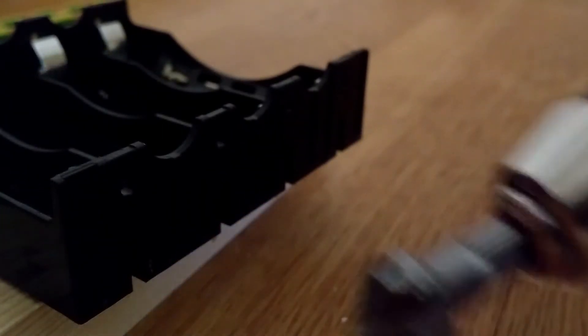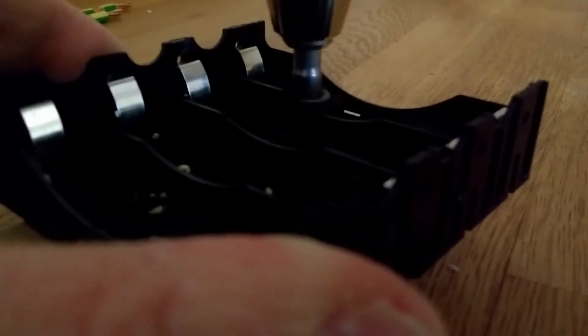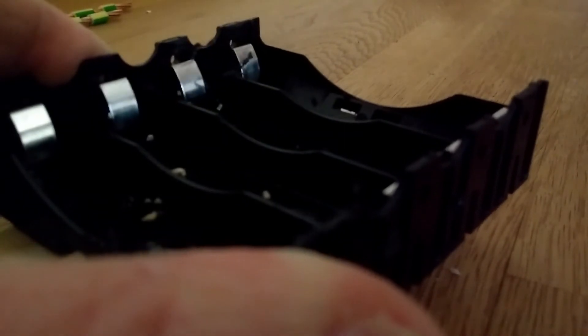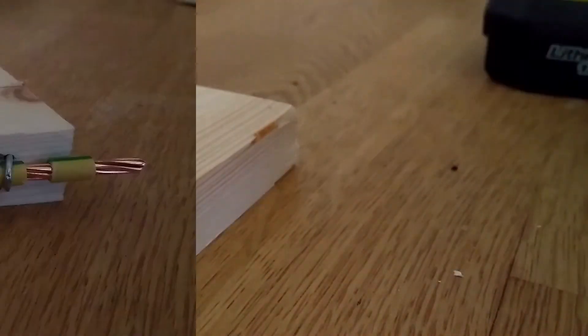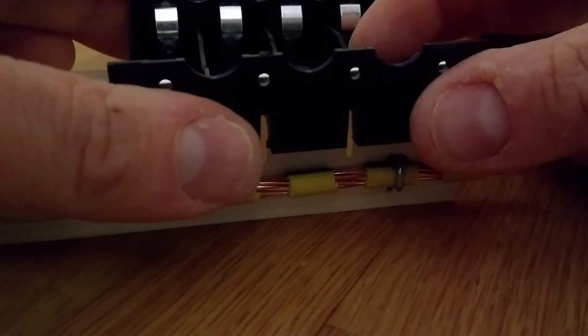I used a countersink to make sure the wood screws would seat flush and not impede the 18650 being inserted to the holder. Once drilled, the holders were attached to the wooden spine with small screws.